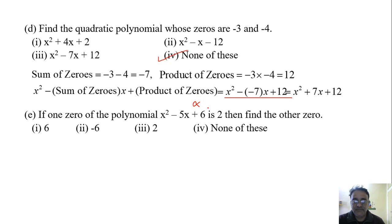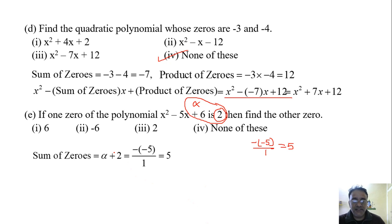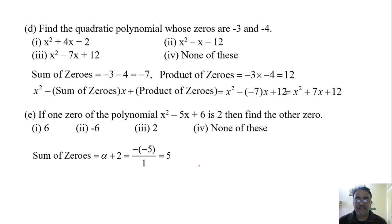Let the other zero be alpha. The first zero is given as 2. For the polynomial, a = 1, b = −5, and c = 6. The formula for sum of zeros is −b/a = −(−5)/1 = 5. So alpha + 2 = 5, which means alpha = 5 − 2 = 3. The other zero is 3. The correct option is the fourth — none of these — as 3 may not appear in the listed options.